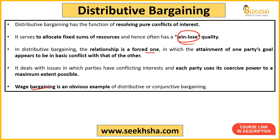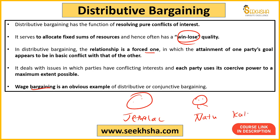Wage bargaining is an example of distributive — also called conjunctive — bargaining. In wage bargaining, if the employer agrees to the worker's demand, he has to pay more salary — that's his loss. If the worker agrees to the employer's position and accepts less, that's the worker's loss. This is a win-lose situation. This is like the Taarak Mehta show — where Nattu Kaka, who is Jethalal's employee, keeps asking for a salary raise and Jethalal keeps refusing — because this is a distributive or conjunctive bargaining situation.